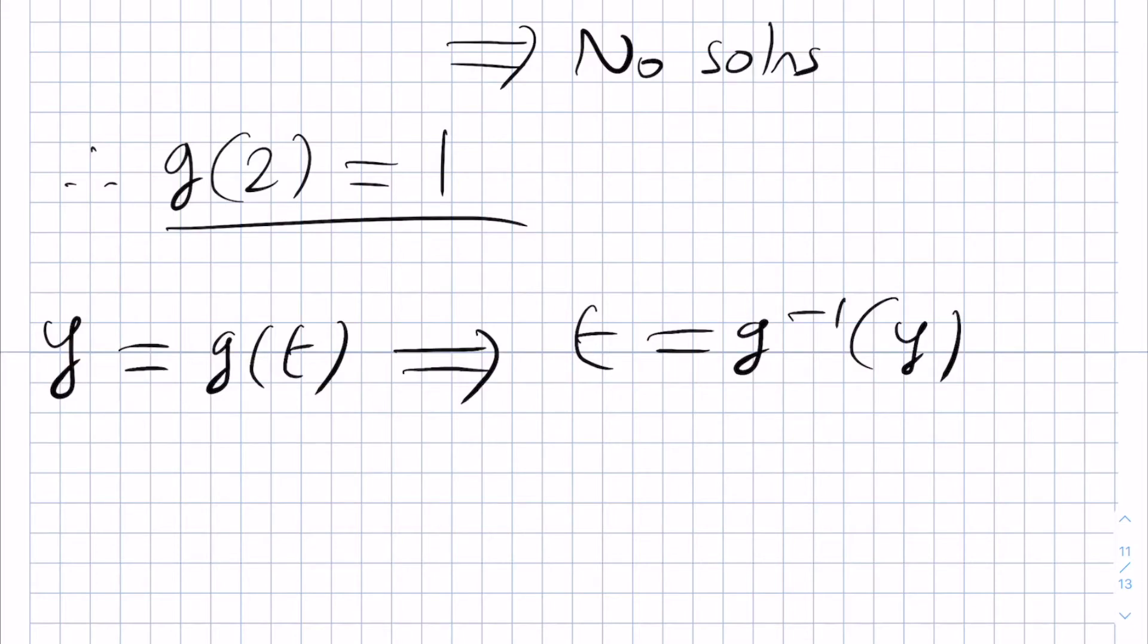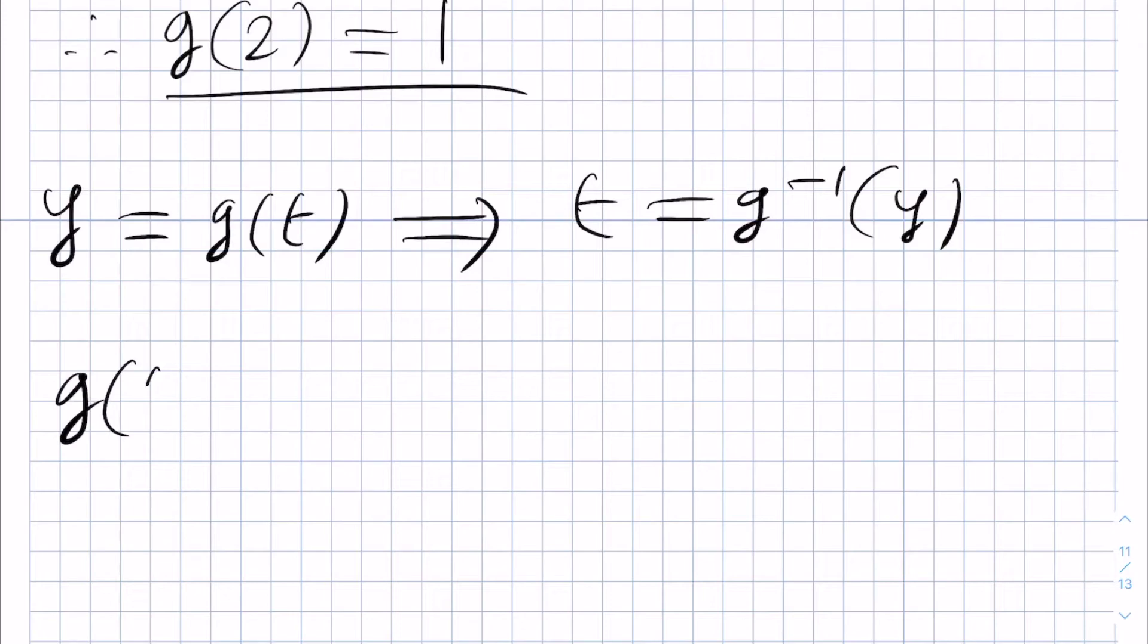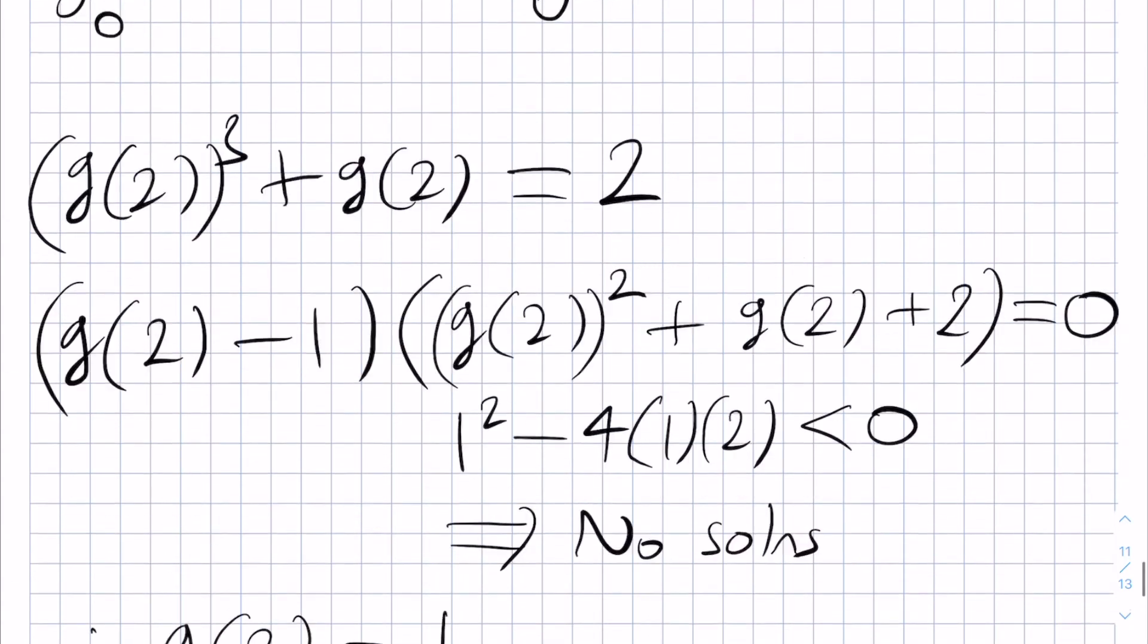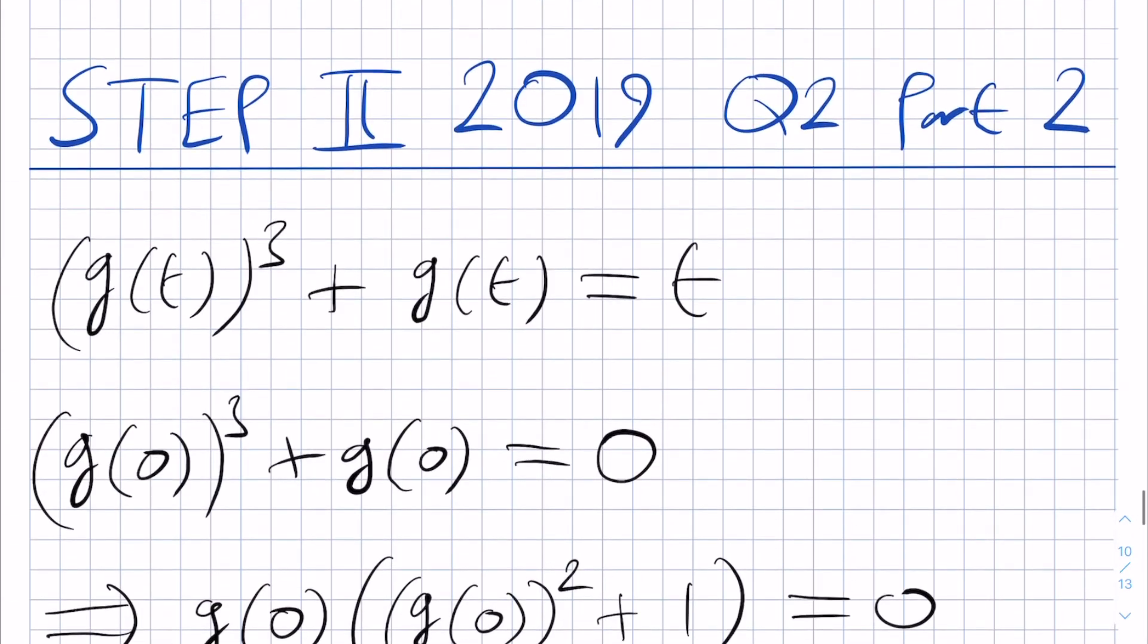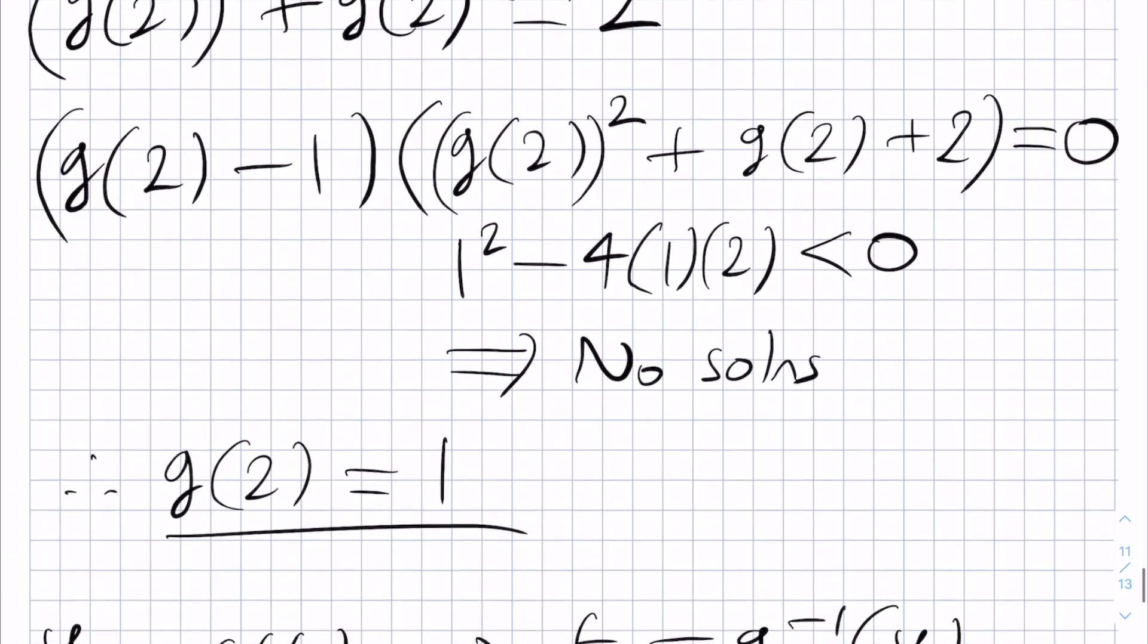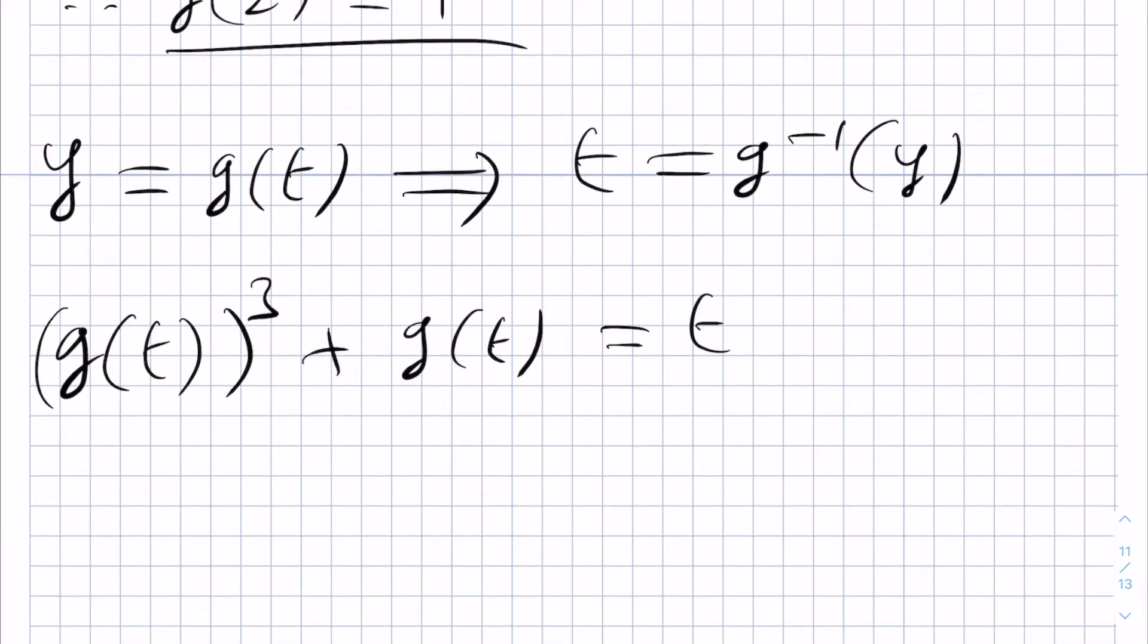And then what do we have? Well, g(t) cubed plus g(t) equals t is the defining relation of g that we had at the beginning. And so we can substitute in the y for g(t) and g inverse of y for t.